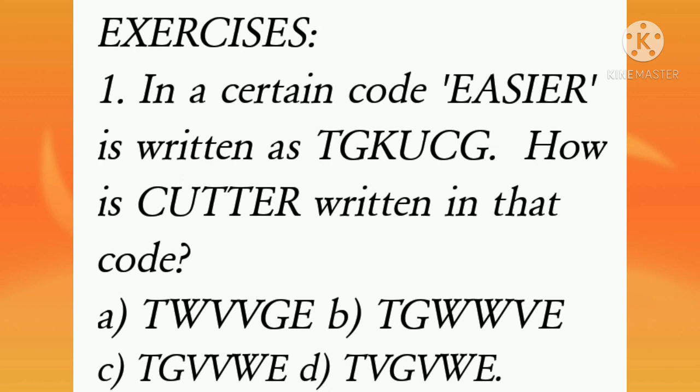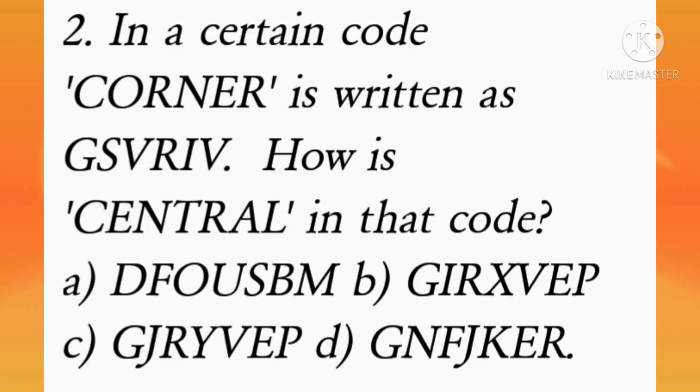See the options and find out the correct answers. Second question: In a certain code C-O-R-N-E-R is written as G-S-V-R-I-V. How is C-E-N-T-R-A-L in that code? Okay, students. Listen to the questions carefully and find out the correct option.